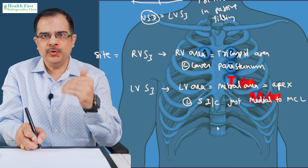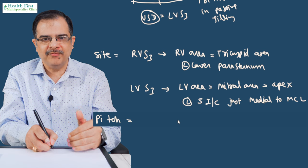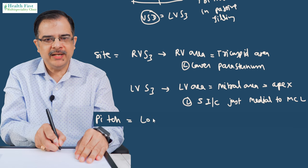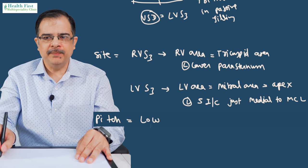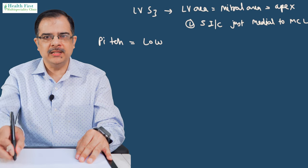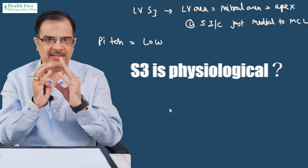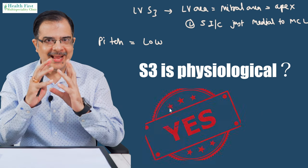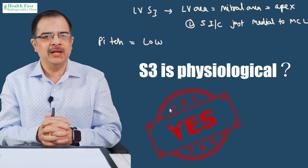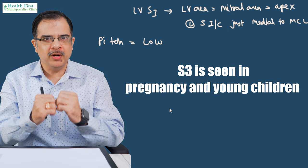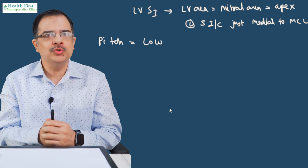How should we use the stethoscope? We use the bell, because S3 is characteristically a low-pitch sound. This S3 is a very important heart sound for practicals as well as MCQs. S3 can also be physiological — it is physiological in pregnancy and in young children, because blood volume is relatively more than ventricular size, so the ventricle will vibrate in those conditions.